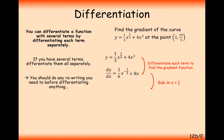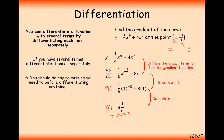Substituting in x equals 1: the 13 over 3 is the y coordinate and doesn't factor in here — the x coordinate is our important value. Substituting x equals 1, we get one sixth times 1 to the power of minus one half. Now 1 to the power of anything is just 1, plus 8 times 1. So the answer is 8 and a sixth — that's the gradient at this point.